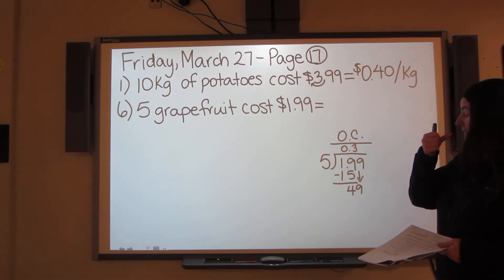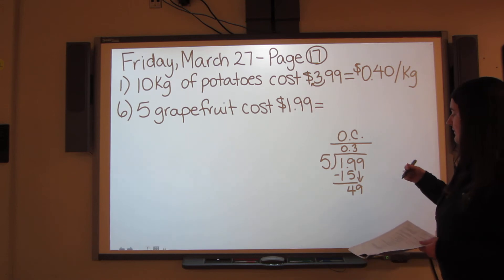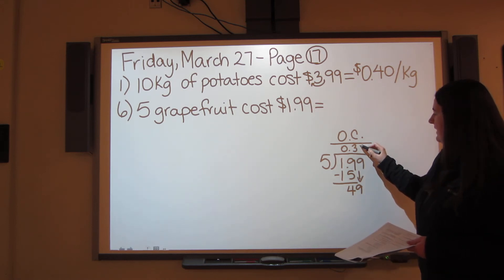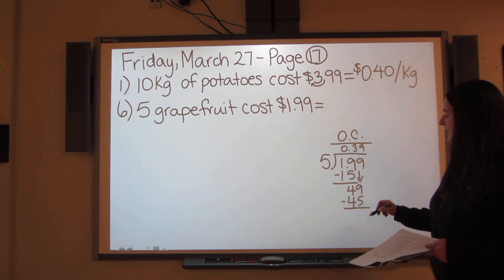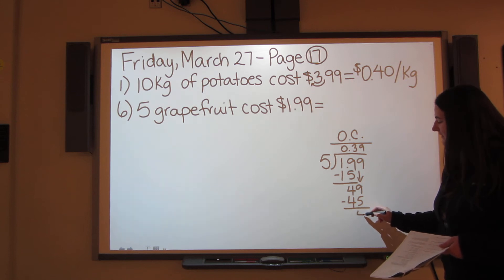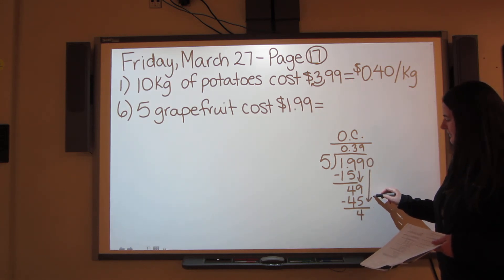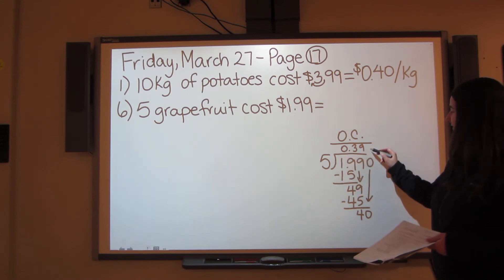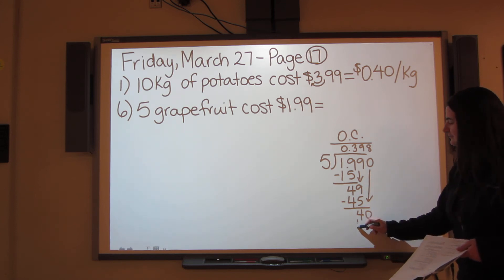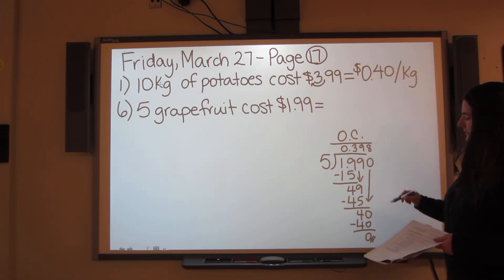So 5 into 49. You look down your 5s again, until the closest thing to 49, without going over, which is 9. That's right. 9, which is 45. And again, you've got 4 left over. Drop your 0. 5 into 40 goes 8. So there's your 40. You're all good. Done.